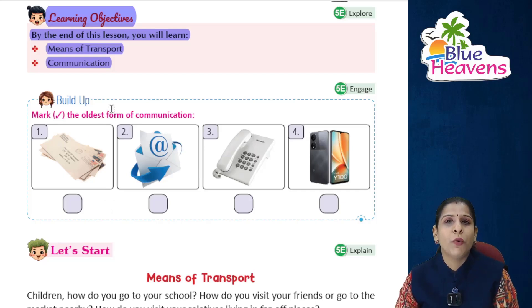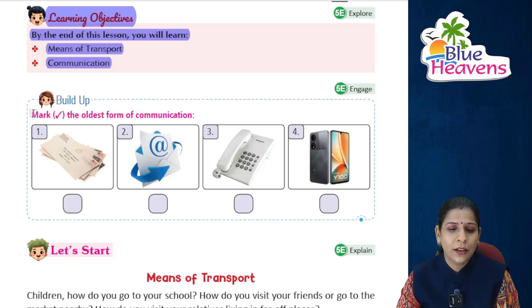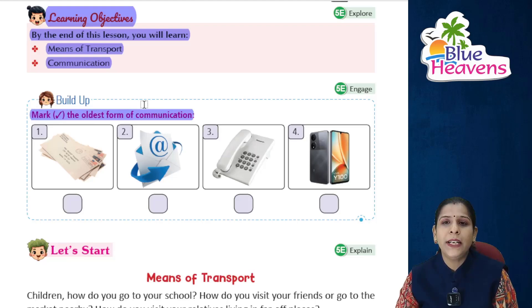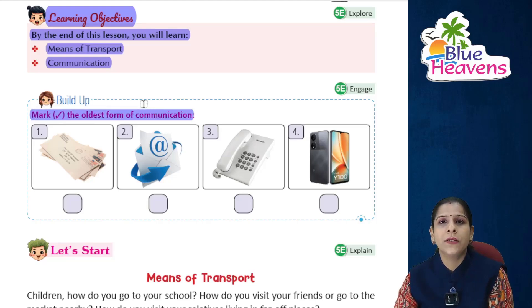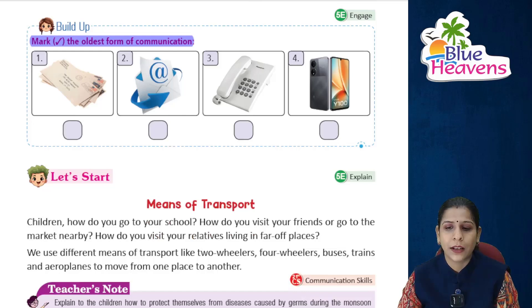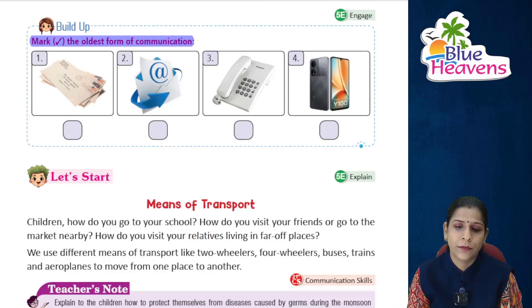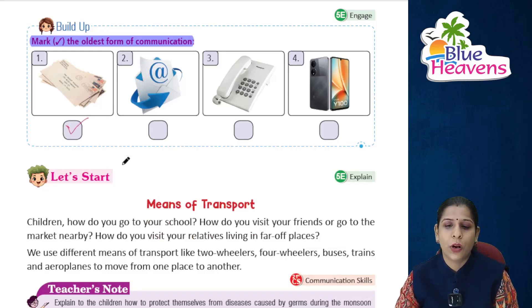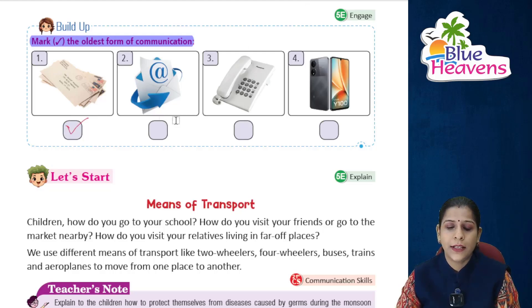Before starting the chapter, we have a small activity: mark the oldest form of communication. What was the oldest form of communication? You can mark it with a tick. Now let's start the chapter.